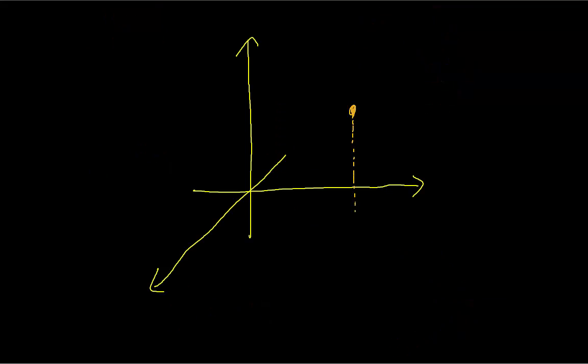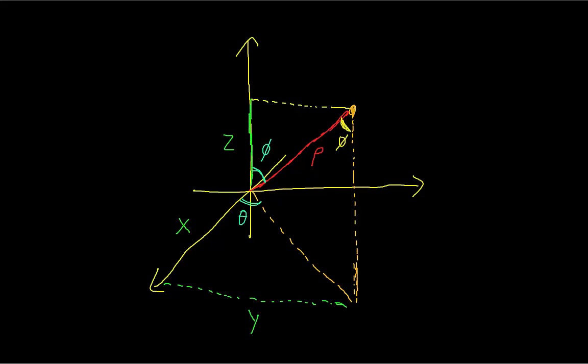Now we need some equations to convert between rectangular and spherical coordinates. Looking at the diagram, we can see that z is equal to rho times the cosine of phi. That's the easiest one.